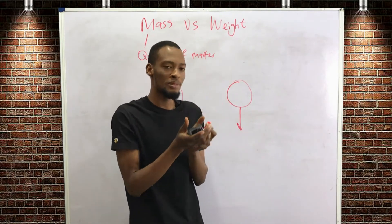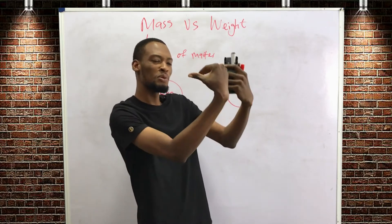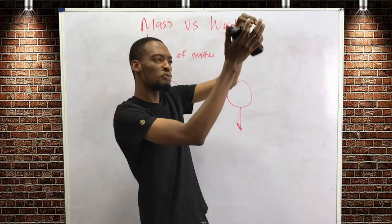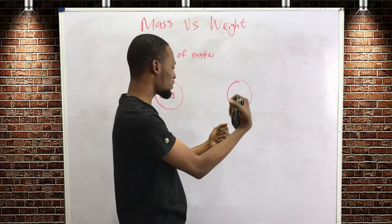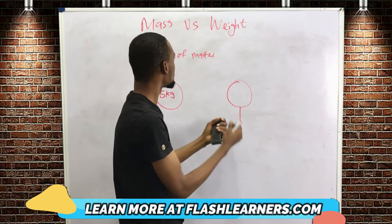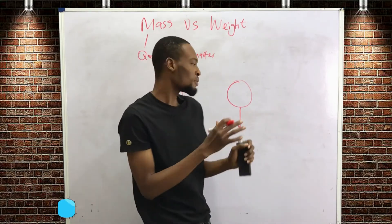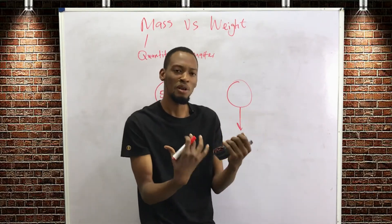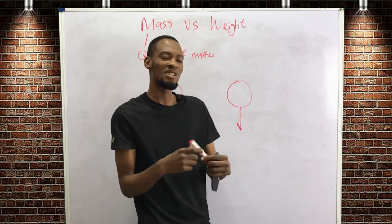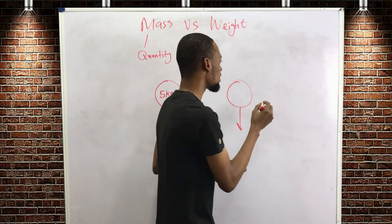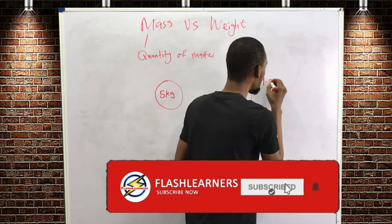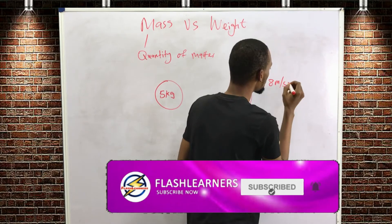When you throw something up it comes down, because the Earth is pulling it down. The Earth has a force that pulls a body down. The mass of the body times the pull of the Earth makes up weight. That pull of the Earth is called gravity, and gravitational force on Earth is approximately 9.8 meters per second squared.